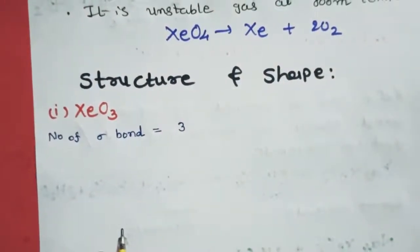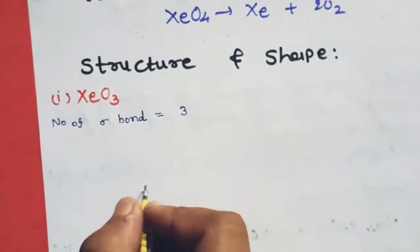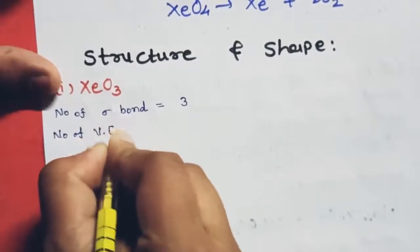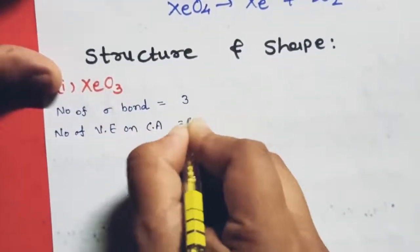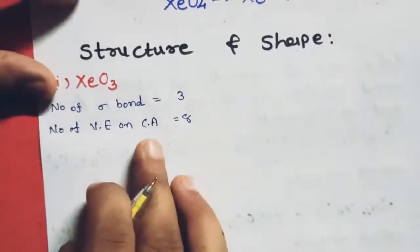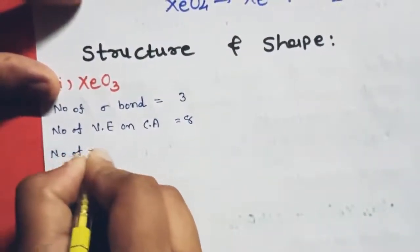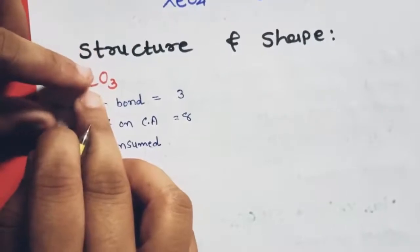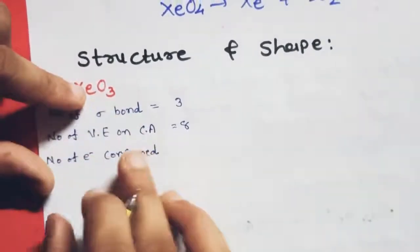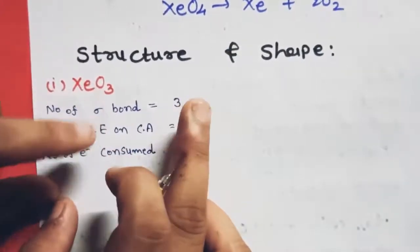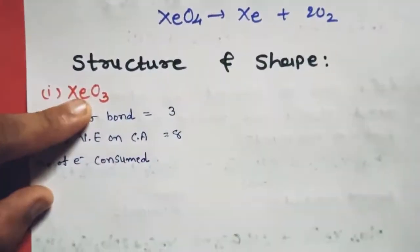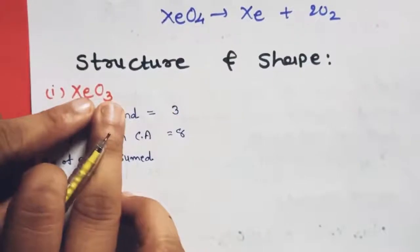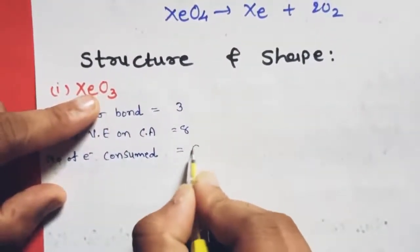For XeO₃ structure: Number of valence electrons on central atom (Xe) = 8. Number of electrons consumed: 3 sigma bonds + 3 pi bonds are formed because oxygen forms double bonds with xenon, so 6 electrons are consumed.